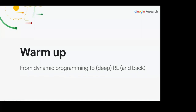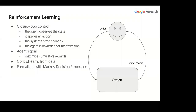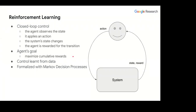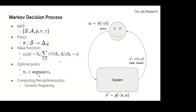We'll start from dynamic programming, go to deep reinforcement learning, and then back to dynamic programming. Reinforcement learning is a closed-loop control problem: an agent observes the state of the environment, applies an action, the system changes state, and the agent receives a reward. The goal of the agent is to maximize its cumulative rewards, and the control is learned from data. This is formalized with Markov Decision Processes.